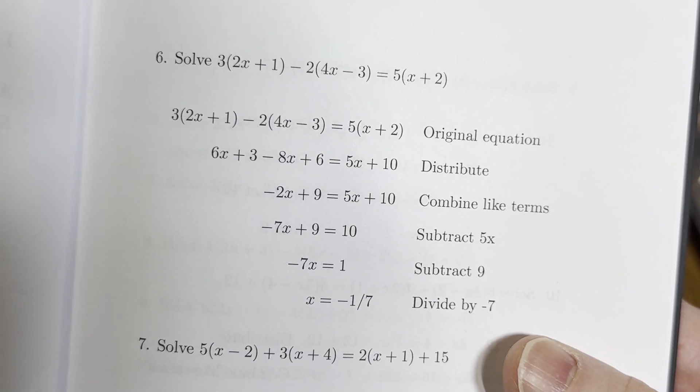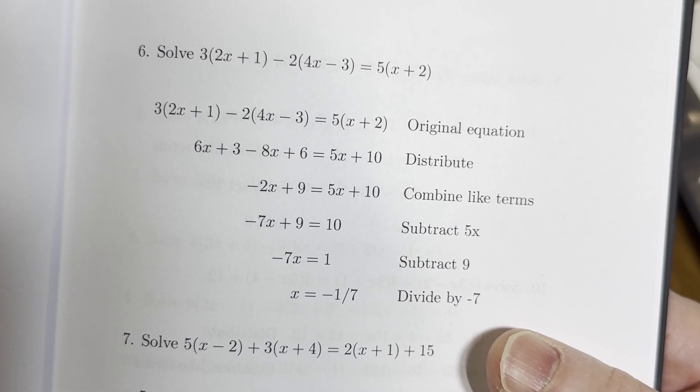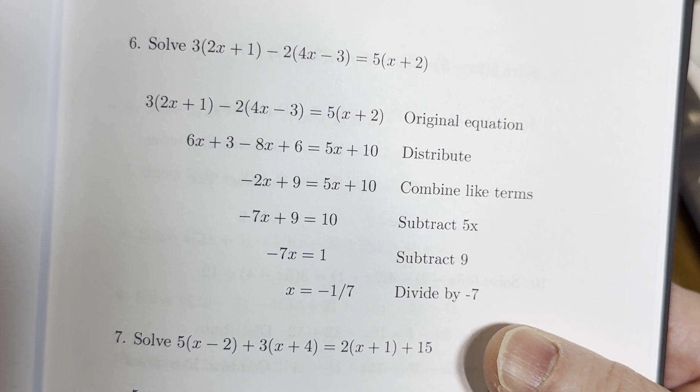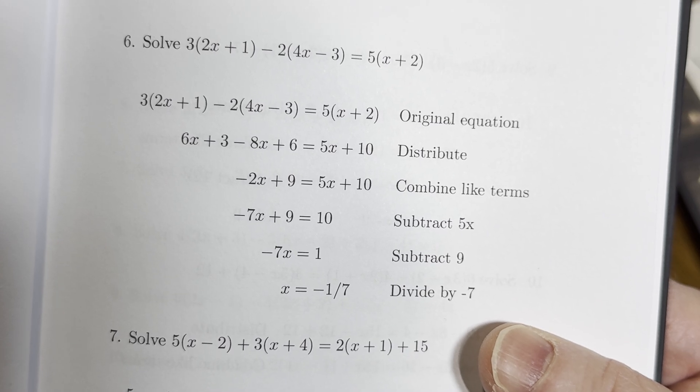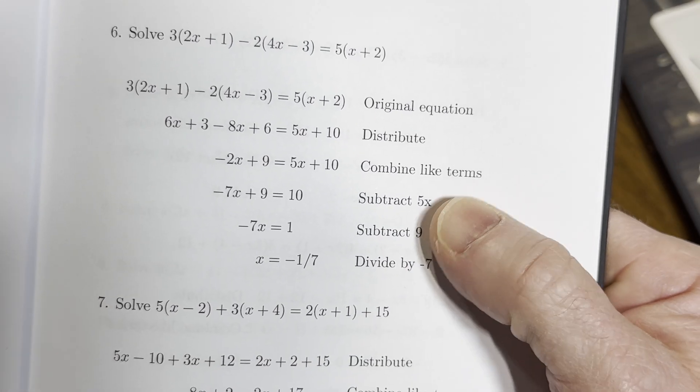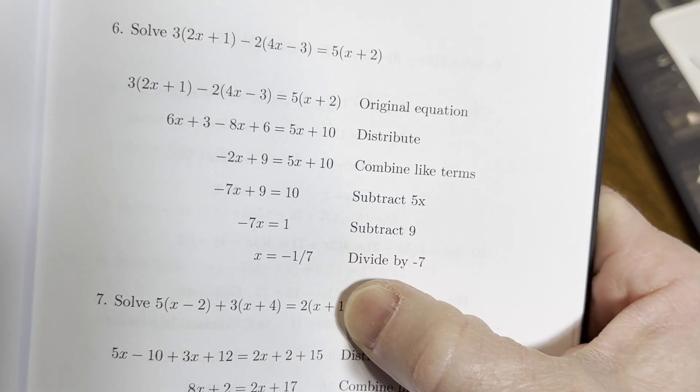So yes, 6x plus three minus 8x plus six equals 5x plus ten, right. And then negative 2x plus nine equals 5x plus ten, yep. Negative 7x plus nine equals ten, right. We subtracted that 5x. And then there we are, so we have the same answer. Very good, negative one over seven.